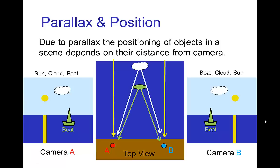A very strong visual cue for depth and distance is parallax. Parallax is an effect where, when we look at a scene from different positions, the locations of objects change depending on their distance from the viewer or camera. Picture a scene at the beach: when the camera is in position A, we see from left to right the sun, a cloud, and a boat on the water — the boat is closest, then the cloud, then the sun. When the camera moves to position B, these locations in the field of view change: the boat shifts most, then the cloud, then the sun.